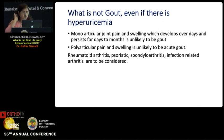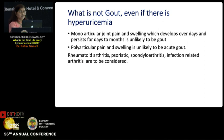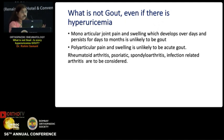So what is not gout, even if there is hyperuricemia? The problem is that whenever someone has arthritis, panels are ordered that also include uric acid. One finds a uric acid of 7, the patient has some joint pain, and we often start treating that hyperuricemia as gout. However, a monoarticular joint pain which develops over days and persists for days to months is unlikely to be gout. Any joint pain which persists for a month or so is unlikely to be gout, even if it is monoarticular.